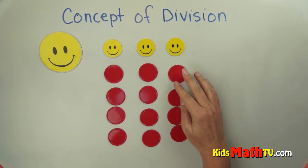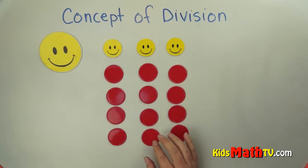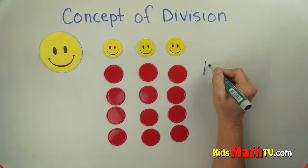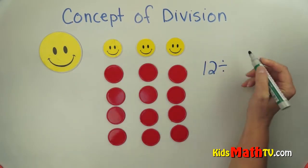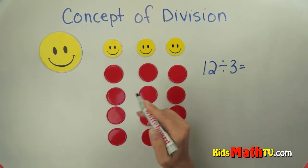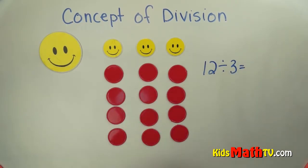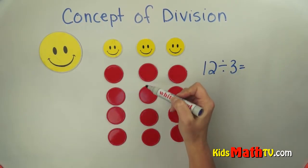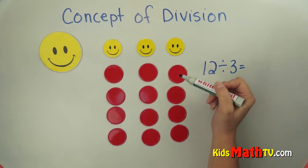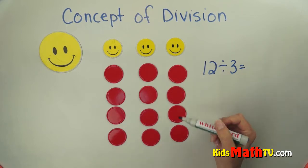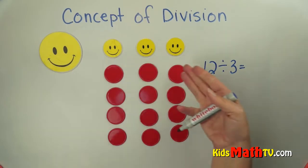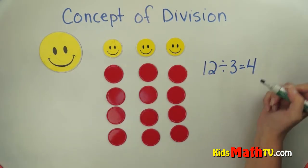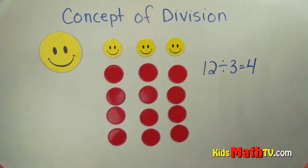12 candies — each brother gets the same amount of candy. So we started with 12 candies and we divided it by 3 brothers. And we got 4 in this group, 4 in this group, and 4 in this group. So 12 candies divided into 3 equal parts is 4 in each group.